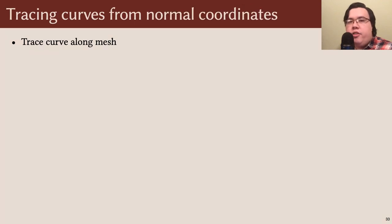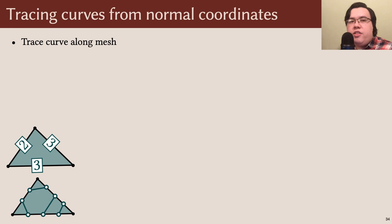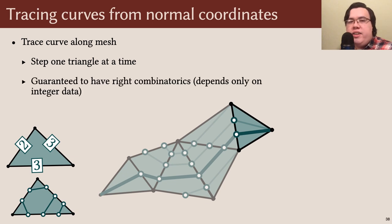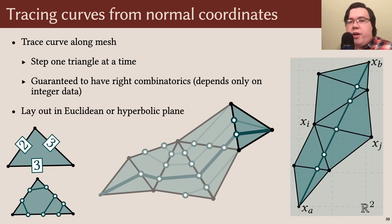The basic operation that we apply to normal coordinates is tracing out a curve along a mesh. In each face, the normal coordinates uniquely determine the connectivity of the curves. That is to say, each edge has some number of crossings along it, and in each face we can tell which crossings connect to each other. Using this, we can trace out the connectivity of any curve by stepping triangle by triangle until we determine the whole triangle strip that it passes through. Note that this connectivity is guaranteed to be correct, as it depends only on integer data. We can then lay this triangle strip out in the plane and simply connect the endpoints by a straight line to determine the geometry of the curve.